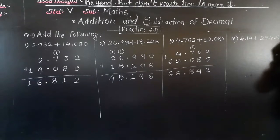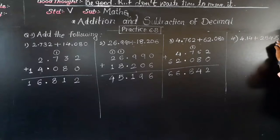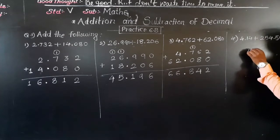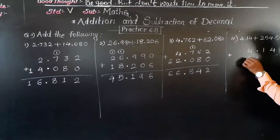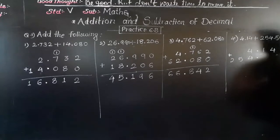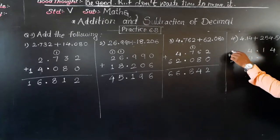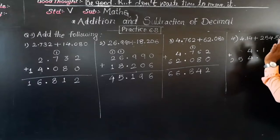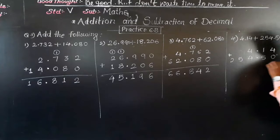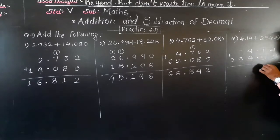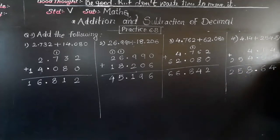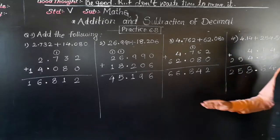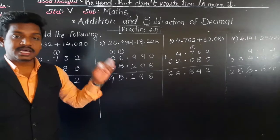Fourth example: 4.14 plus 254.5. Here there are two decimal places and one decimal place, so let us put one zero making it 254.50 — both become like decimals. Now write 4.14 plus 254.50 vertically with decimal points aligned. Since 4.14 has no tens or hundreds, you can write zeros there if needed. Adding: 4 plus 0 is 4; 1 plus 5 is 6; decimal point; 4 plus 4 is 8; then 5 as it is; and 2. So the answer is 258.64. In this way we add decimals.